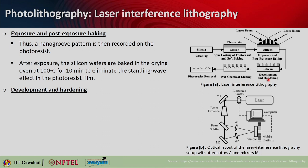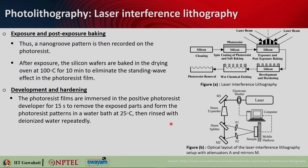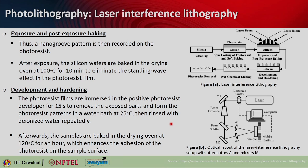The development step involves immersing the photoresist films in a positive photoresist developer for 15 seconds to remove the exposed parts and form photoresist patterns in a water bath at 25°C, then rinsing with deionized water repeatedly. The samples are then hardened by baking in a drying oven at 120°C for one hour, enhancing adhesion of the photoresist to the sample surface. This leaves the final photoresist pattern hardened on the substrate.